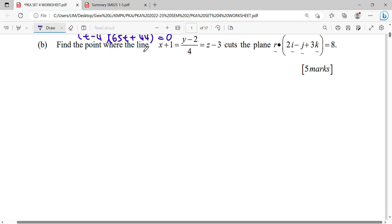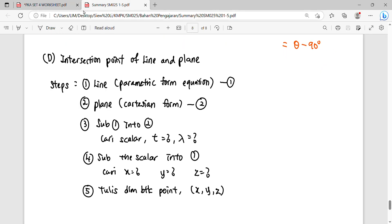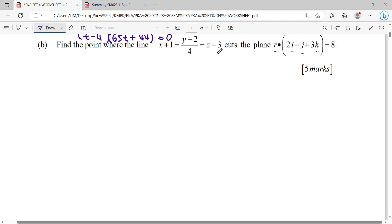So for this question where your line equation is given in Cartesian, you have to change the Cartesian to parametric. Then it cuts a plane. Plane is in vector form, so plane goes to Cartesian. You have to change the form of the equation first. Okay, so what is your parametric here?